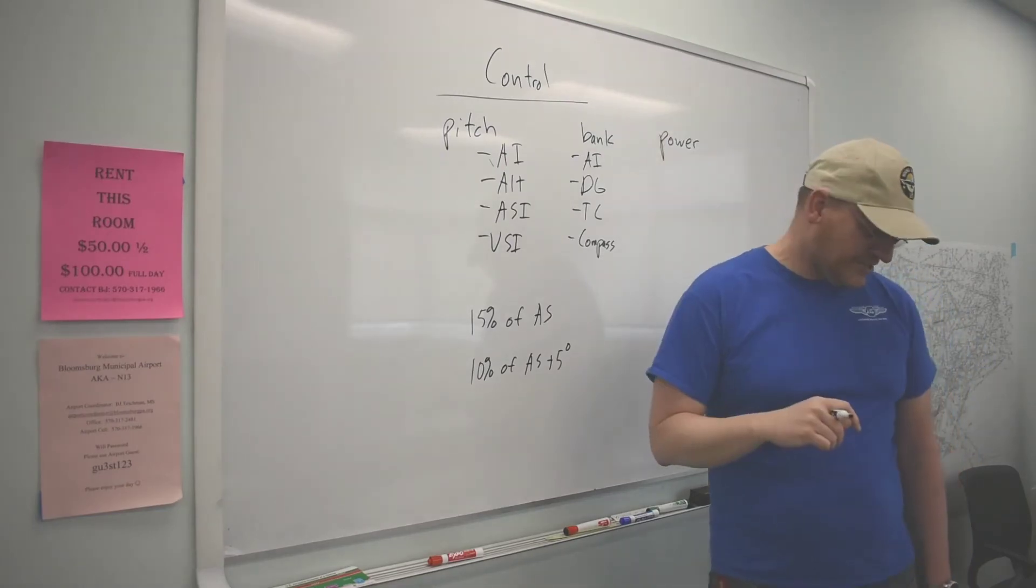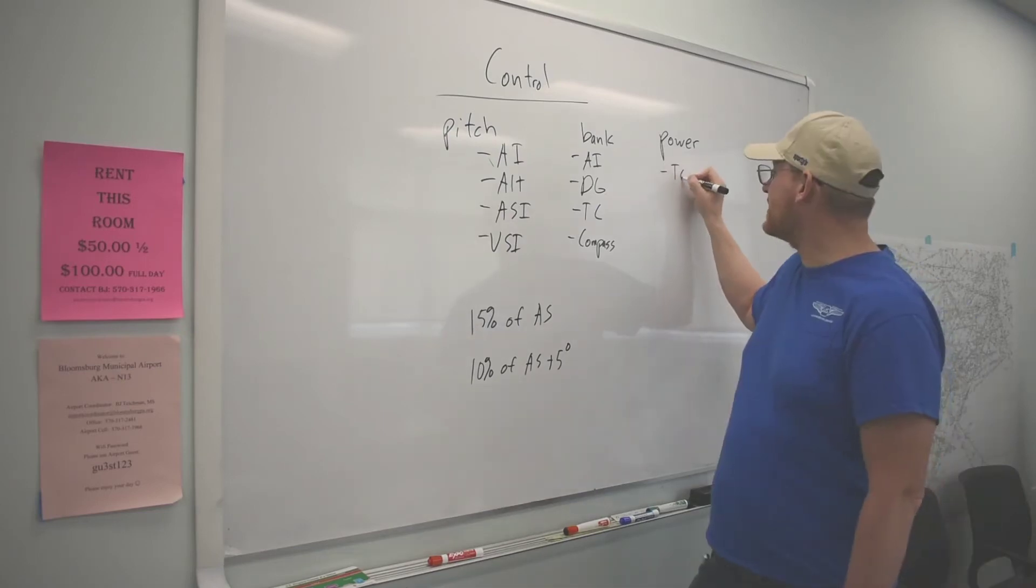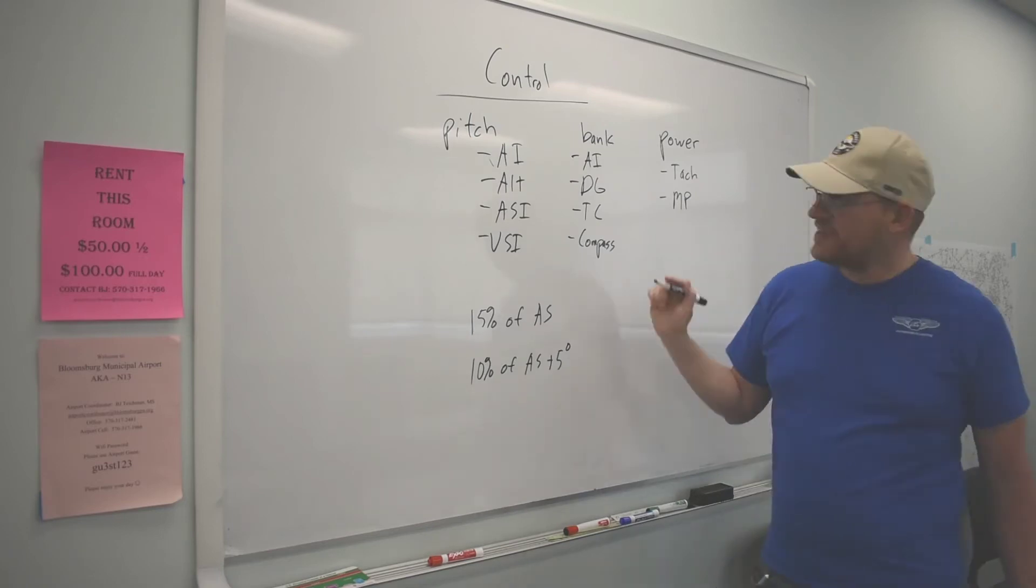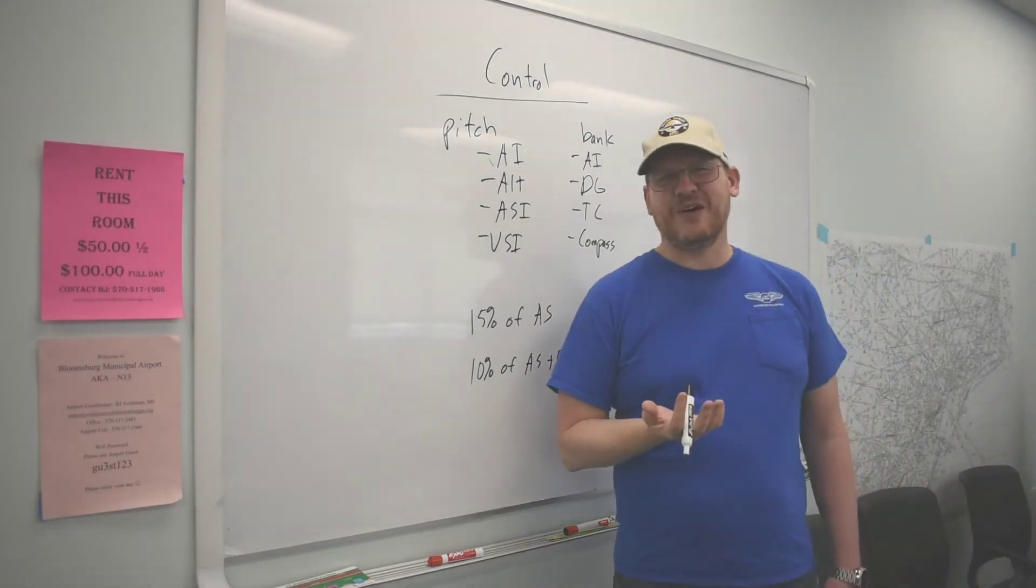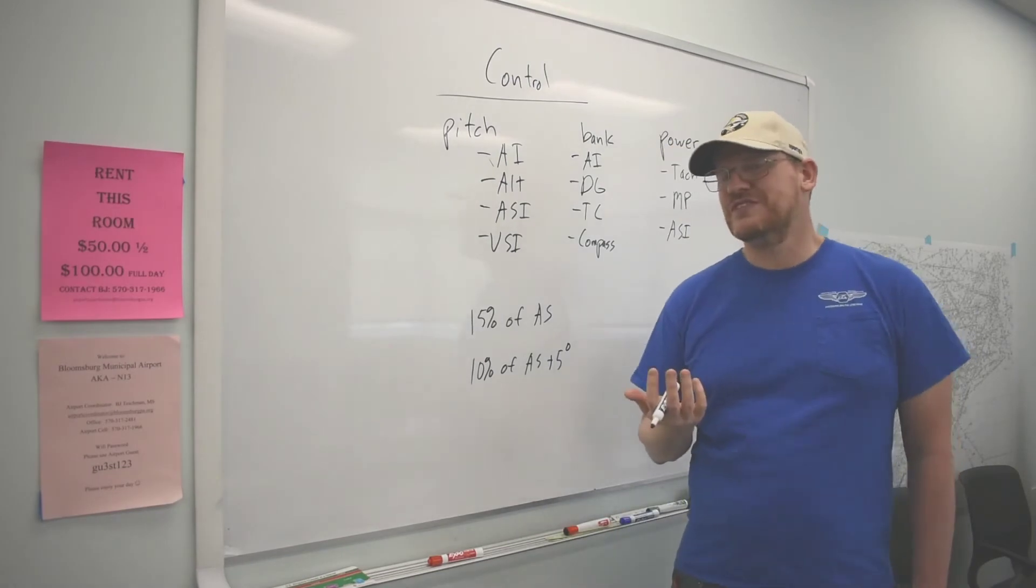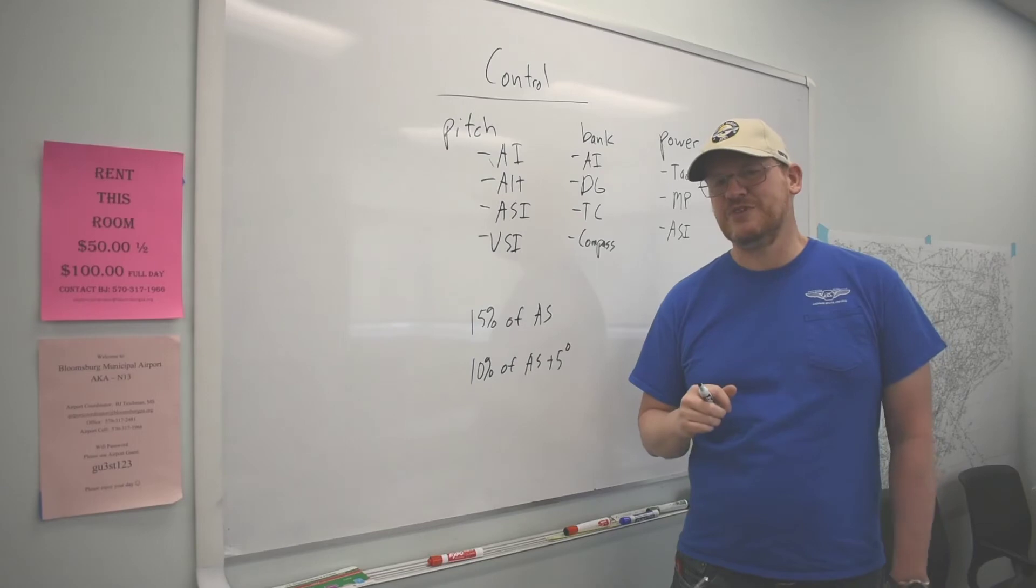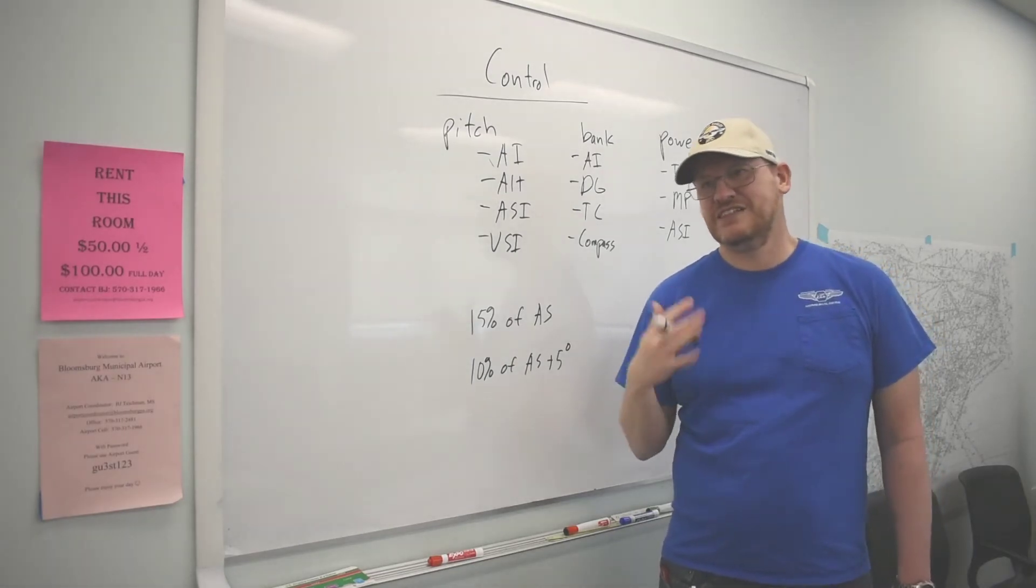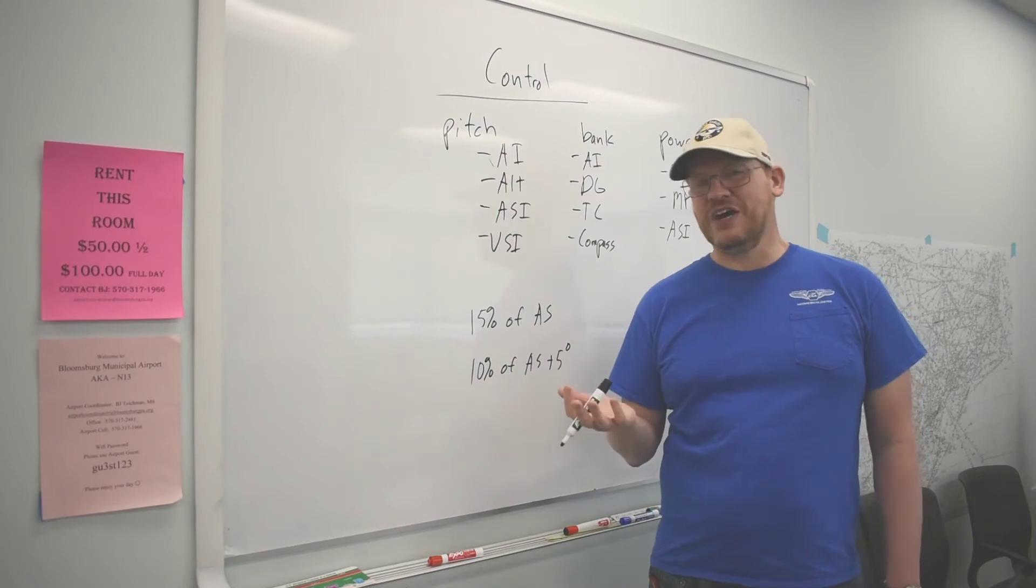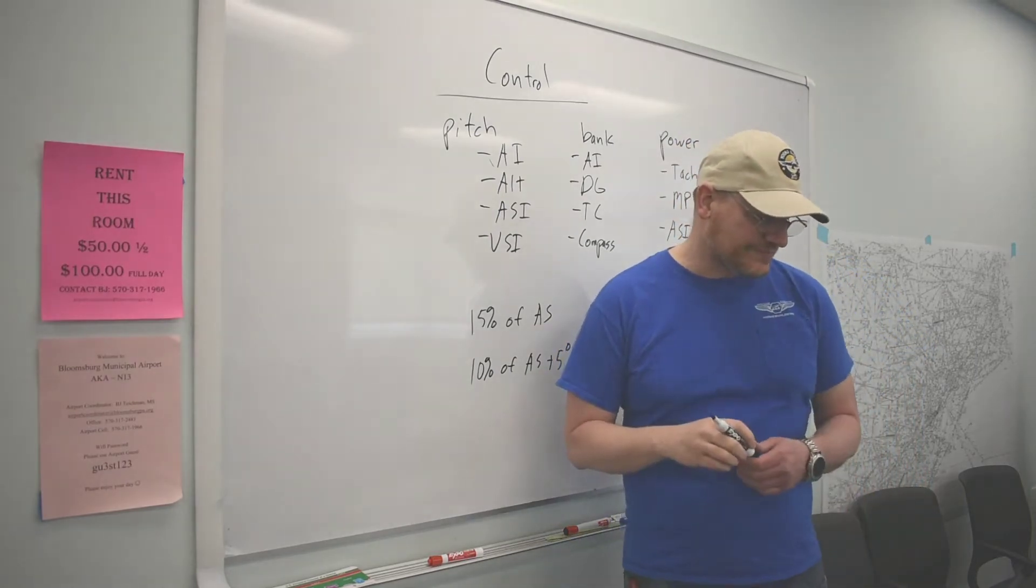After a while, you'll figure this out for yourself. And finally, we have power. What instruments tell us how much power we have? The tach and manifold pressure, if we are so equipped, and also the airspeed indicator. My cruise speed is directly related to how much power I have. If I'm level in flight, I'm going to go faster if I have more power and slower if I have less power.